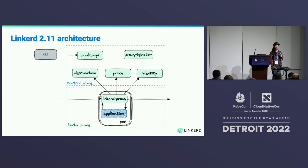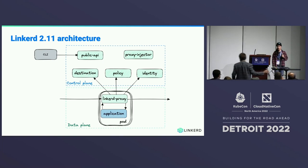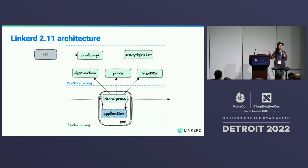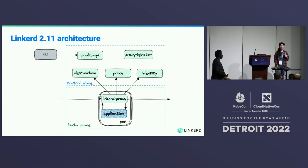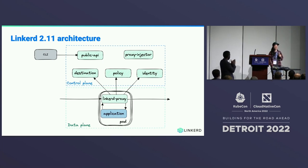Q: Can you say anything about the communication between your data plane and control plane? In Istio they use XDS because that's what Envoy exposes. A: Conceptually it's very similar to the XDS APIs from Envoy, but it's a separate gRPC API. Each of the control plane components exposes a gRPC API, and the proxies connect to the control plane to get that information. Conceptually very similar to XDS, but a different thing. Thank you, everybody — I'll be hanging out if you want to ask me more questions.